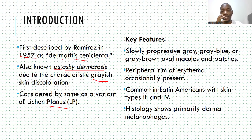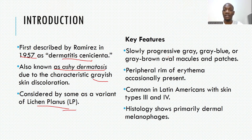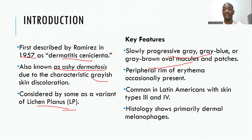Other people think it is its own entity and has nothing to do with lichen planus. The key features of this condition are a slow progressive gray or bluish discoloration that usually ends up giving brown, oval, annular, or round macules and patches, which usually start in the intertriginous areas.